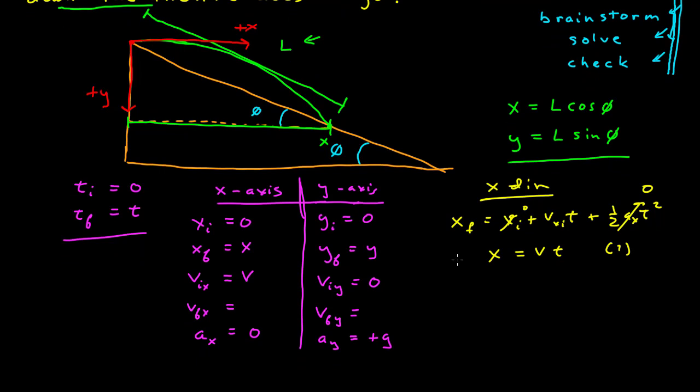If we look in the y direction, we have the similar relationship. And so here, this is zero and this is zero. And so we have y is equal to one half g t squared. And it's positive because the ay is positive.